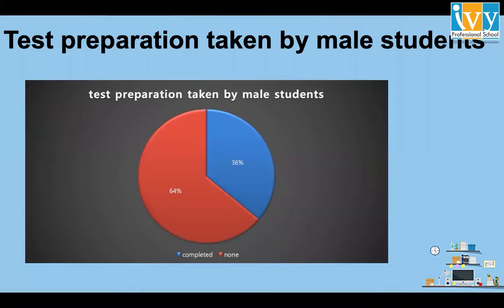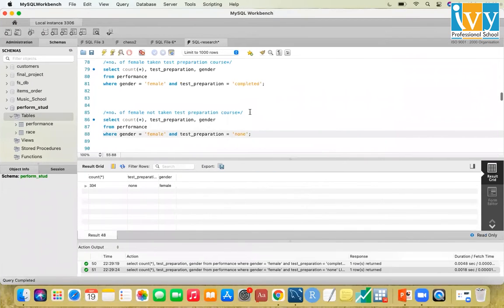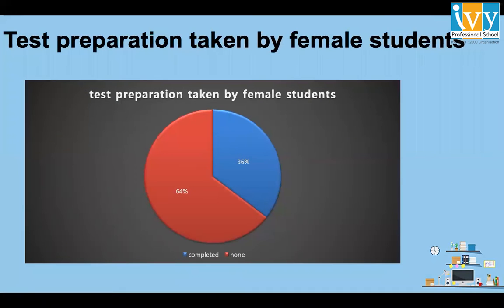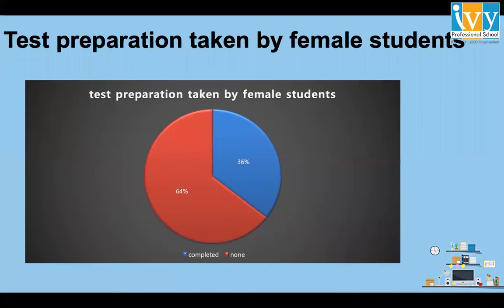Looking at the graph, male students who have taken the test preparation course is 36% and not taken is 64%. Female students who have taken the test preparation course is also 36% and not taken is 64%. So it is the same for both male and female students.